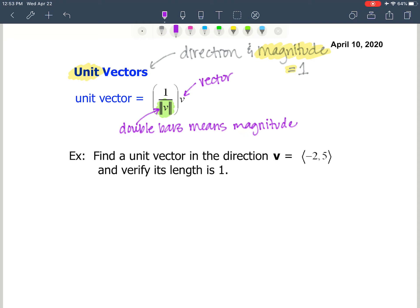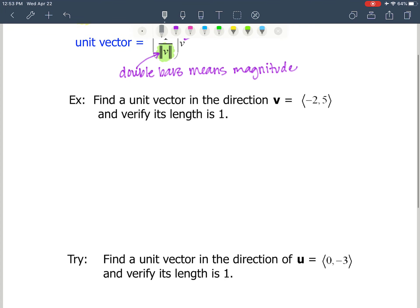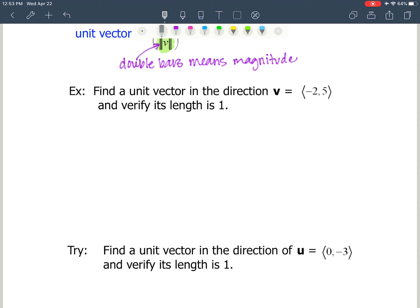We want to find a unit vector in the direction of V, which has a component form of negative 2, 5. And we want to verify its length as 1 when we're all done. So first thing I need to do, number 1, is find the magnitude.